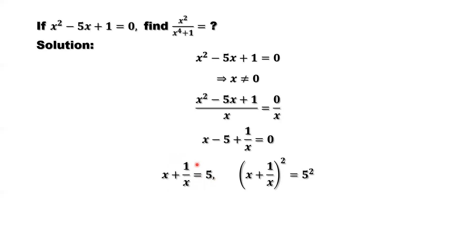Then both sides take the power of 2, simplify. That's x squared, 2 times x times 1 over x, plus 1 over x squared equals 5 squared.